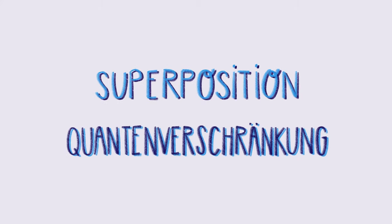Könnt ihr uns Superposition und Verschränkung erklären? Also ein Quantenprozessor benutzt zwei Prinzipien der Quantenmechanik, um seinen Vorteil zu erzielen. Das ist einmal die sogenannte Superposition — das heißt, dass ich jeden einzelnen Zustand, der möglich ist im System, zur gleichen Zeit abbilden kann, im Gegensatz zu einem klassischen Computer.